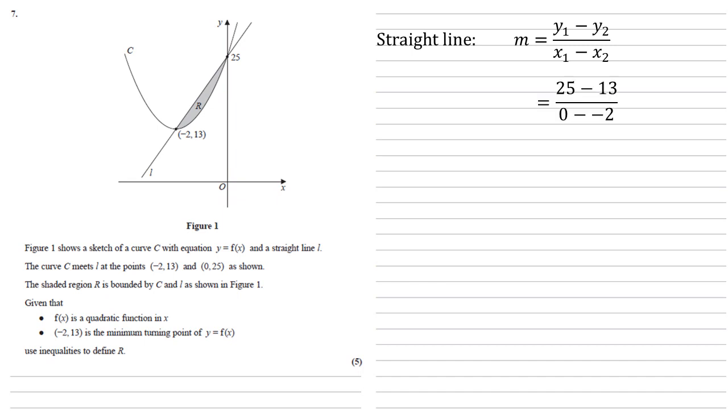So putting them in we get 25 minus 13 all over 0 minus negative 2 which is equal to 6. So we've got a gradient of 6 and we can see from the graph that the intercept is 25. So the equation of the line must be y equals 6x plus 25.